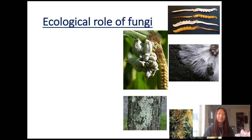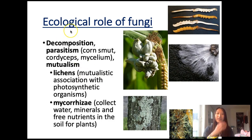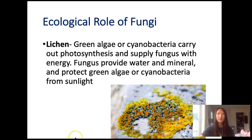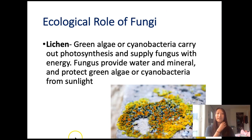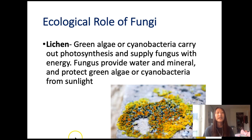Fungi also have some ecological roles, good and bad. They could be decomposers or a parasite. They could also make up lichen — lichen is a mutualistic relationship between multiple different organisms. They can also live on the roots of some plants and allow the plants to better absorb nutrients. Lichen is actually a three-part thing: it contains fungi, green algae, and cyanobacteria. The green algae and cyanobacteria do photosynthesis and supply fungi with energy, while the fungi provide water and minerals for the other organisms and protect the algae and cyanobacteria from sunlight.